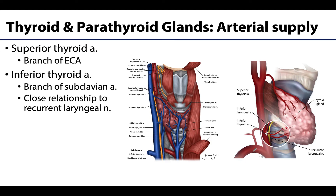All endocrine glands have a very robust vascular supply. Both the thyroid and parathyroid glands will be supplied by the superior and inferior thyroid arteries, although the parathyroid glands typically gain most of their supply from the inferior thyroid arteries. The superior thyroid artery is a branch of the external carotid, and you can see it coming off the external carotid to supply the superior portion of the gland.